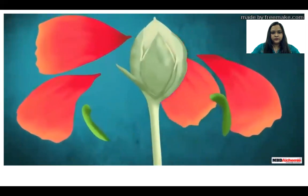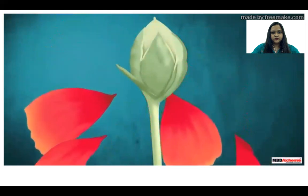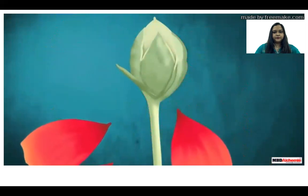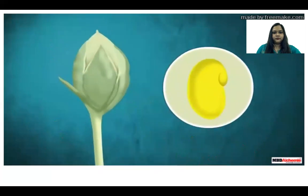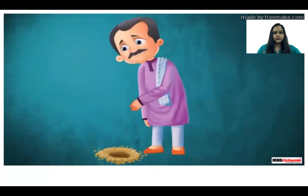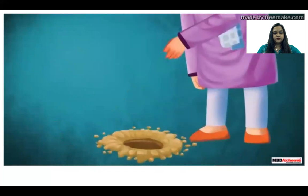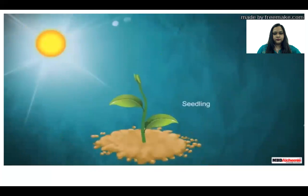If the pollen grain of a flower lands on the stigma of the same flower it is called self-pollination, but if it lands on the stigma of another flower of the same or another plant of the same type it is called cross-pollination. Pollination occurs with the help of different agents like wind, water, or animals. Once a pollen grain reaches the stigma of a suitable flower, a tube grows from the pollen grain, travels through the style, and reaches the ovary.